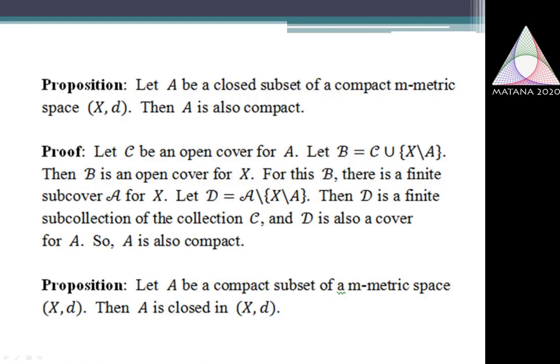I consider a closed subset A of a Compact M-Matrix Space X, and I have to establish that A is a compact set. For this I consider an open cover C for the set A, and I include one more member, X minus A, along with the collection C to form a new collection B. Then B becomes an open cover for X. Being X a Compact M-Matrix Space, B has a finite subcover for X.